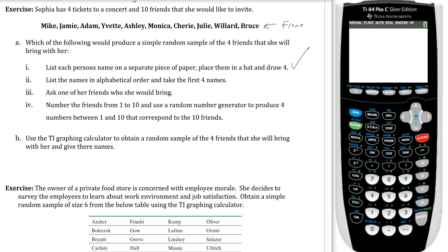First we have list each person's name on a separate piece of paper, place them in a hat, and draw 4. That seems pretty random, so I'll put a check mark. However, the second one not so much. List the names in alphabetical order and take the first 4 names. That is not random at all. There's an inherent bias you're introducing there based on what their name is. Three, ask one of her friends who she would bring. That's even worse. That's introducing human bias to the question. The last one, number the friends from 1 to 10 and use a random number generator to produce 4 numbers between 1 and 10 that correspond to the 10 friends. That is our random process.